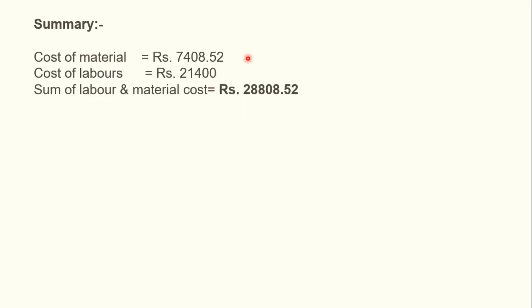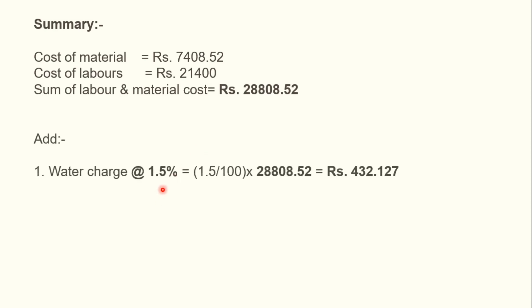Adding these four values gives a total labor cost of 21,400 rupees. Material cost is 7408.52 rupees, so labor plus material equals 28,808.52 rupees. In addition, we calculate water charges as 1.5% of labor plus material cost: (1.5 / 100) × 28,808.52 = 432.127 rupees.